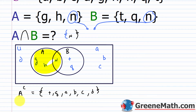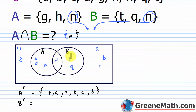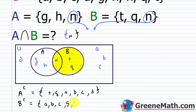And for B complement, that would be anything outside of the B circle. Looking at the Venn diagram, B complement contains a, b, c, g, h, and d.